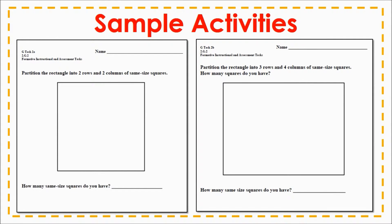Two sample tasks for partitioning rectangles have been provided by DPI. In both tasks, students are asked to partition the rectangle into a certain number of rows and columns and to count the total number of squares they drew. Folding rectangles into equal square-like regions would provide students with a way to explore partitioning before recording onto their sheets. These activities also further build students' understanding of how arranging squares in rows and columns creates a rectangular array.